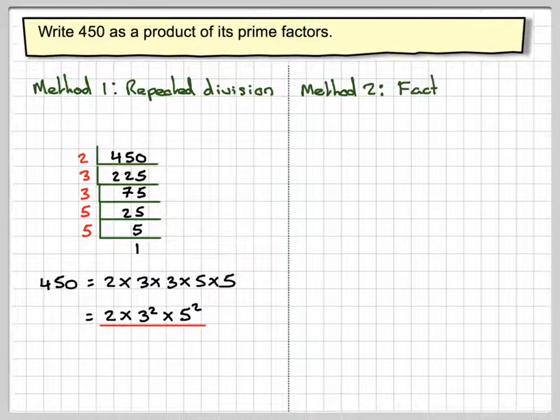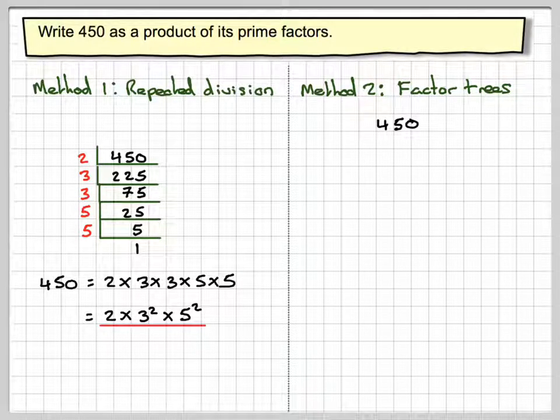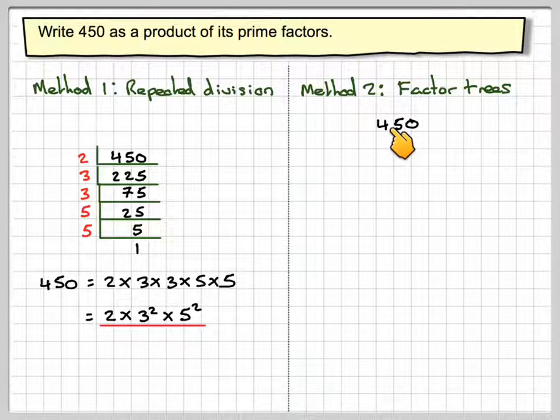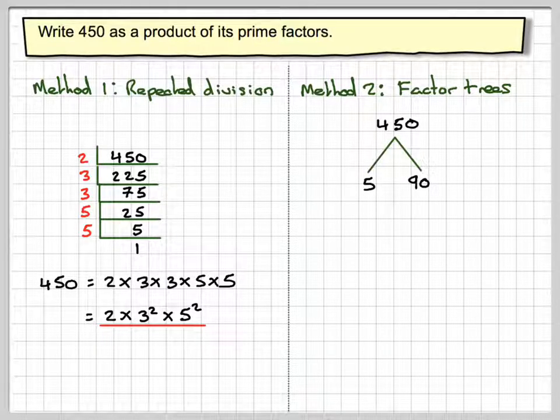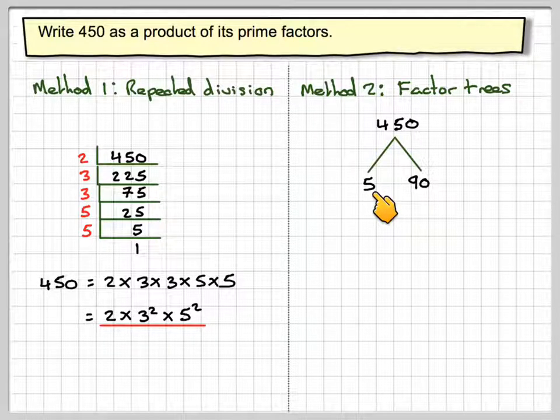Using the other method by factor trees, so we take 450. Well instead of putting two into it, let's divide that by five. Five into 450 gives 90. That's a prime number so there we stop.